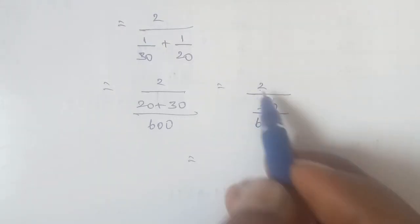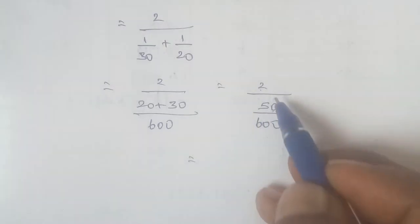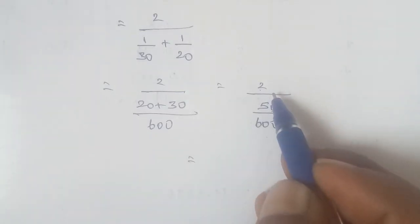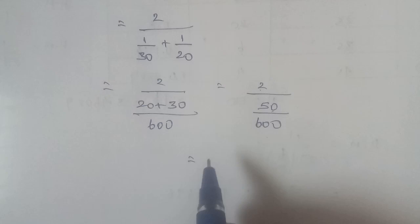So it equals 600 divided by 50. Dividing this gives us the final answer.